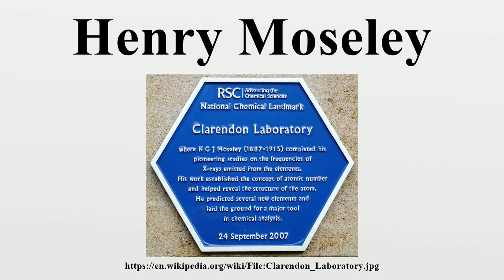Moseley's experiments in X-ray spectroscopy showed directly from their physics that cobalt and nickel have the atomic numbers 27 and 28, and that they are placed in the periodic table correctly by Moseley's objective measurements of their atomic numbers. Hence, Moseley's discovery demonstrated that the atomic numbers of elements are not just rather arbitrary numbers based on chemistry and the intuition of chemists, but rather they have a firm experimental basis from the physics of their X-ray spectra.